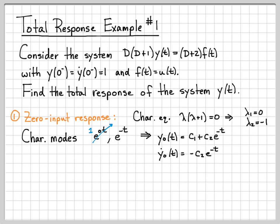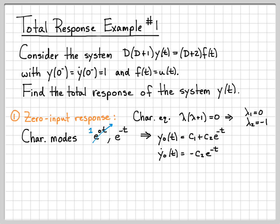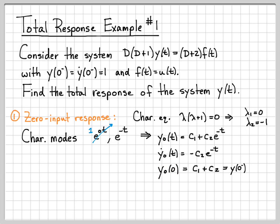I'm going to use some initial conditions to figure out what these unknowns are. Those initial conditions involve the derivative, so I'll go ahead and take the derivative of y_0. The derivative of the constant is 0, so that went away, and the derivative of the next term gives a minus sign out front. Now, at time zero, we know that the zero input response has to equal c1 plus c2, and this equals y at zero minus — because before anything has happened, the total response equals the zero input response.